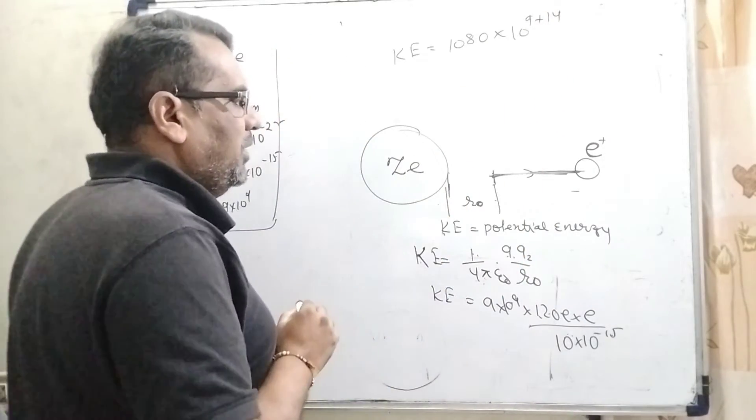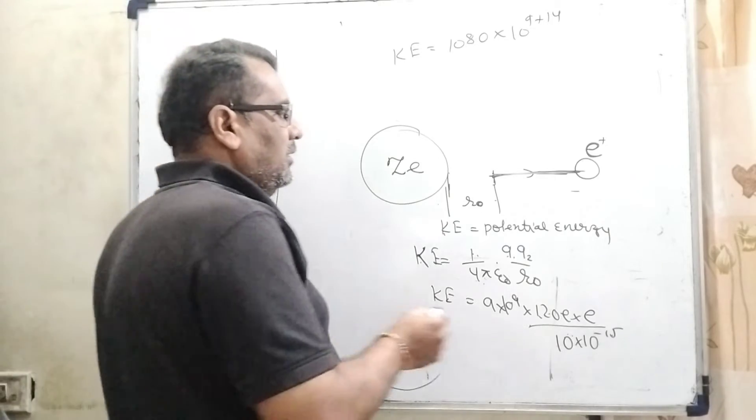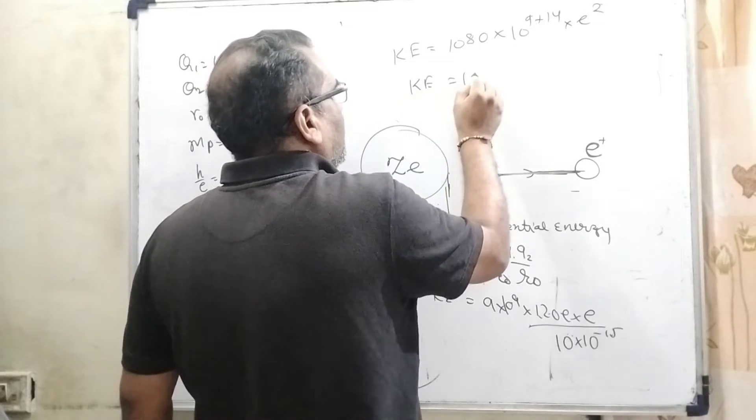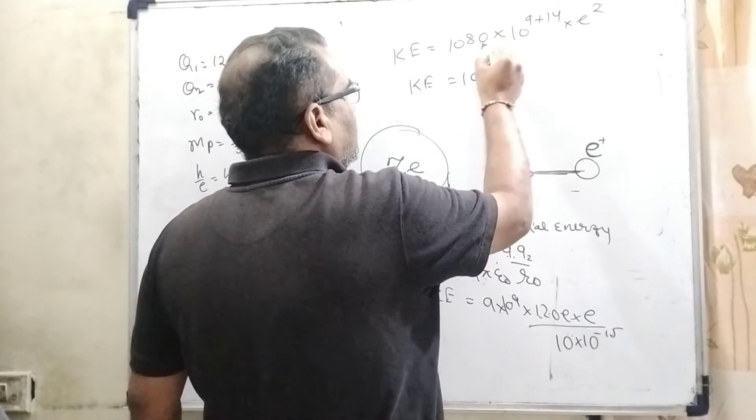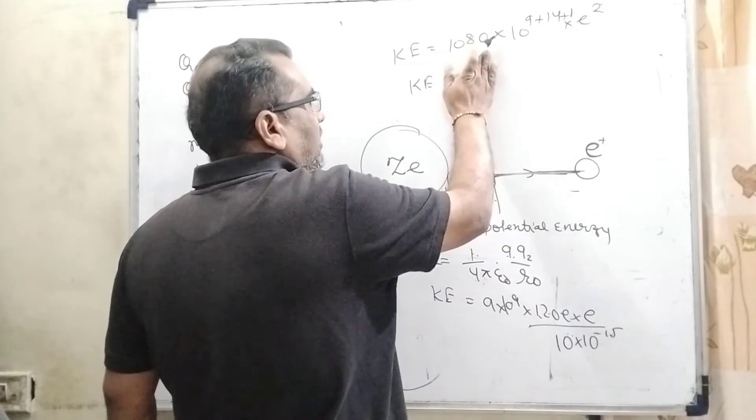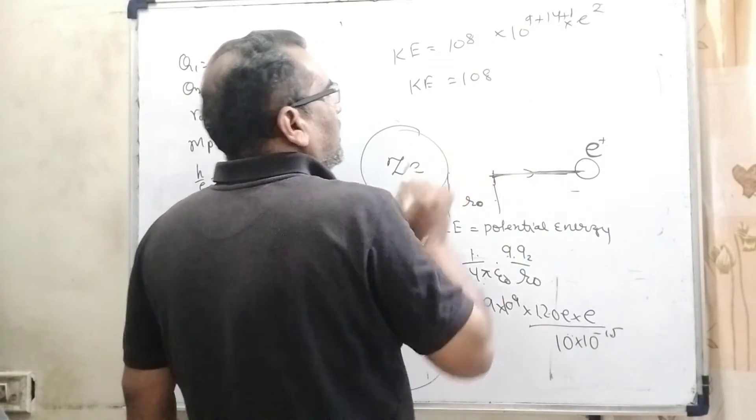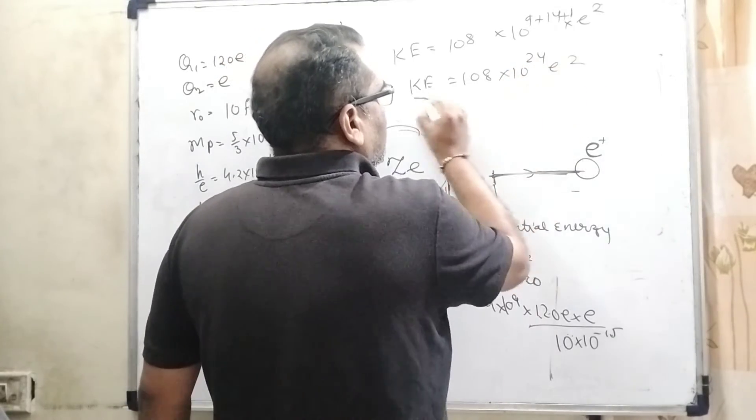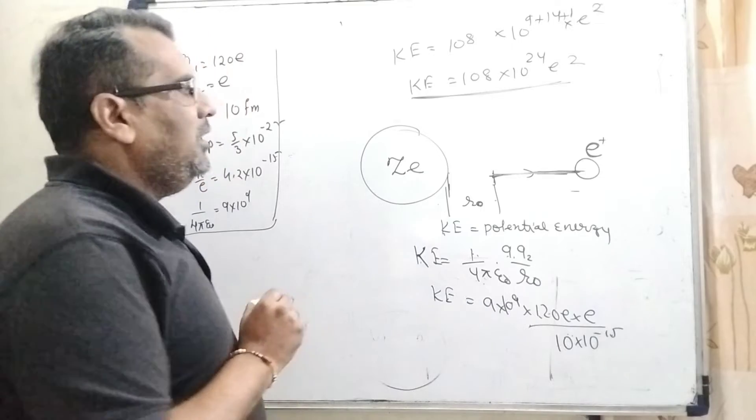So here 9 + 14 and e². In short it can be written as 108 with the ending 0, plus 1, becoming 10 to the power 24 e². Okay, clear?